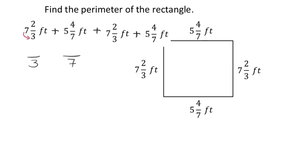Using the cycle method: seven times three is 21, add the numerator two to get 23 thirds. Then five times seven is 35, add the numerator four to get 39 sevenths. Since the left and right sides are the same, I know the second pair also converts to 23 thirds and 39 sevenths without recalculating.